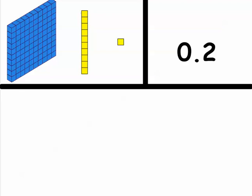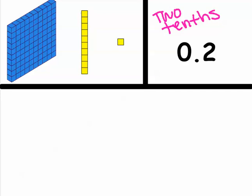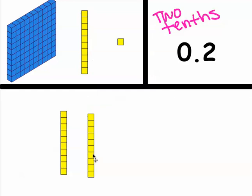Let's try another problem. We have a 0 in the ones place value, so there are no whole numbers, and we have a 2 in the tenths place value — so this is 2 tenths. Then we think about how to make this number using base 10 blocks. We don't use any hundreds blocks because there are no whole numbers, but we have 2 in the tenths place value, so we're going to use 2 tens blocks to represent 2 tenths.